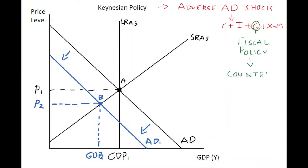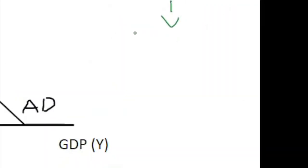Counter-cyclical means that when demand falls in the economy, the government should be trying to stimulate extra demand. If the private sector — in this case the consumer — is not spending, then the public sector should step in. The government should spend. To counter this, when aggregate demand falls we should use what's called expansionary fiscal policy.